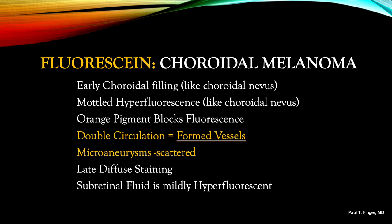Turning to fluorescein angiography of choroidal melanoma: it is a choroidal tumor, so we expect early choroidal filling. Like a choroidal nevus, we expect mottled hyperfluorescence of smaller tumors trapped beneath Bruch's membrane and the RPE. We see orange pigment, and pigment blocks fluorescence, so orange pigment will also block fluorescence. Once the tumor has broken through Bruch's membrane and the RPE, we're likely to see a double circulation. We can also see formed blood vessels within and on the tumor. Microaneurysms will be best seen on fluorescein, and are often present. Like most choroidal tumors, there will be late diffuse staining, and many characteristics will have passed in the early phases of the angiogram.